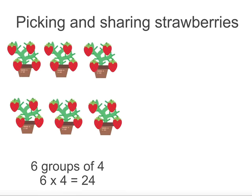Six groups of four is six multiplied by four, which equals 24. I could write four plus four plus four plus four plus four plus four equals 24, but this is a much longer way to solve the question. We need to shift our thinking to multiplication strategies rather than addition, especially as the numbers get larger.